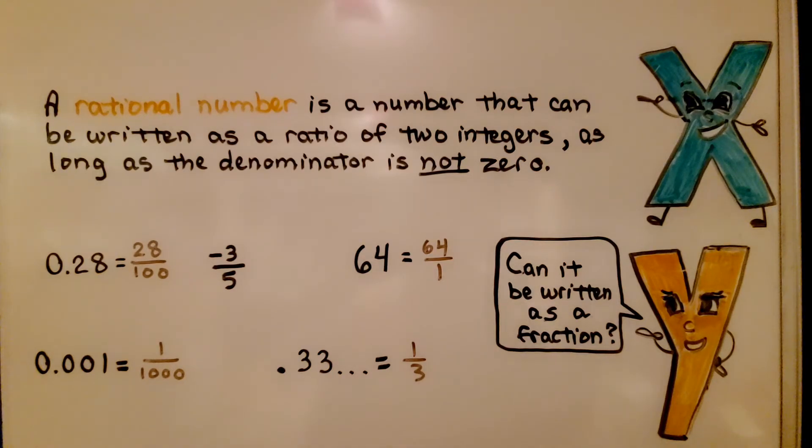A rational number is a number that can be written as a ratio of two integers, as long as the denominator is not zero. So it can be written to look like a fraction. We have 28 hundredths. We can write the 28 over a 100 denominator. This is a rational number.